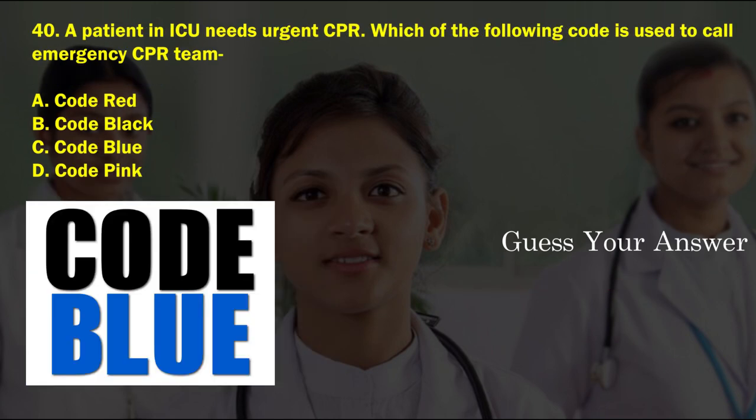A patient in ICU needs urgent CPR. Which of the following codes is used to call the emergency CPR team? Option A: code red, option B: code black, option C: code blue, option D: code pink. The correct answer is option C, code blue.